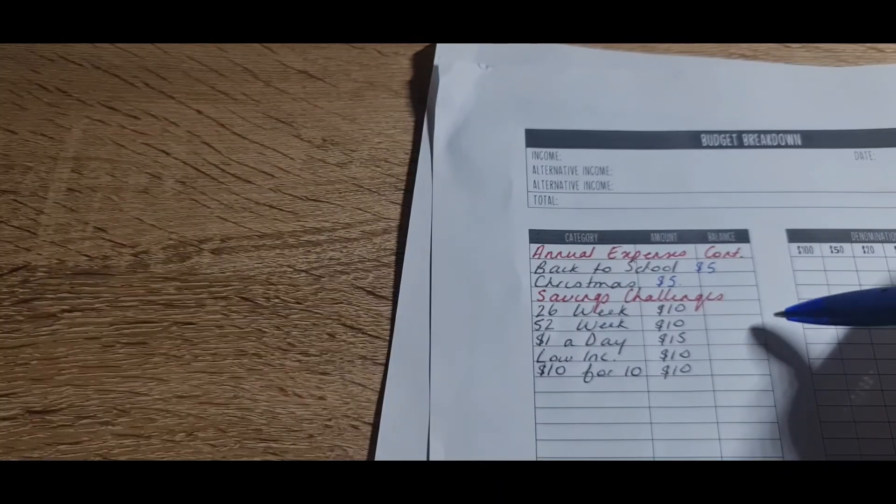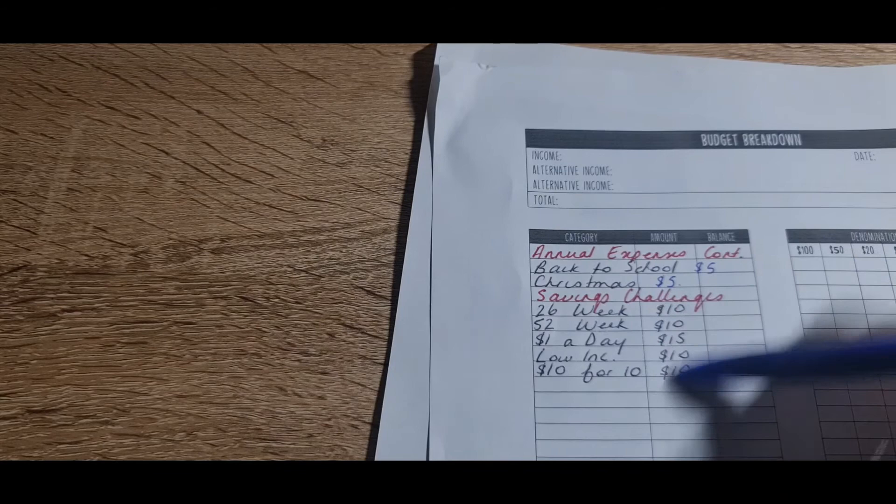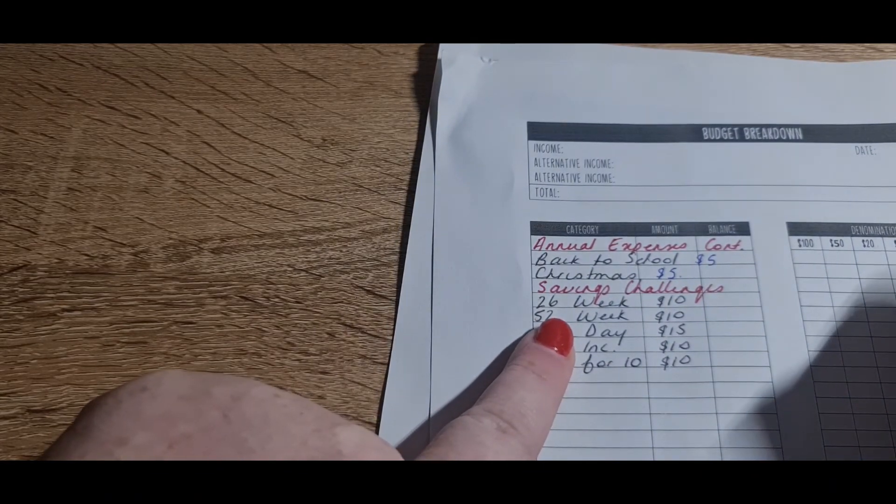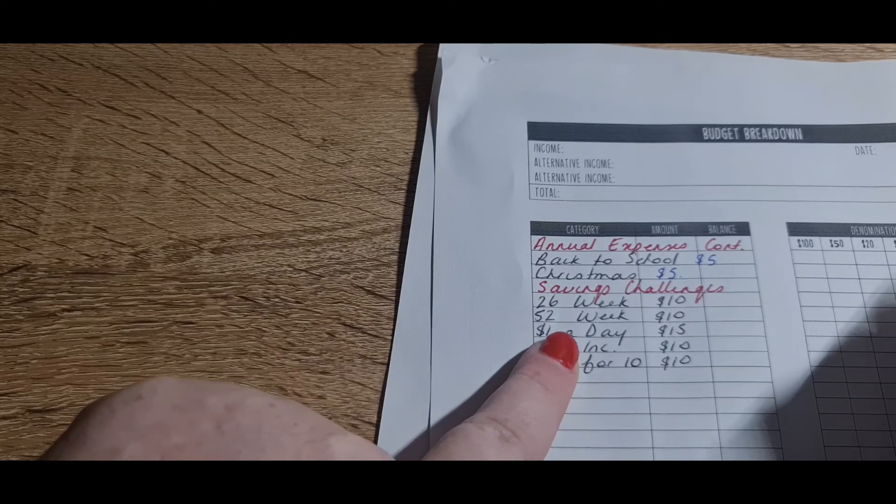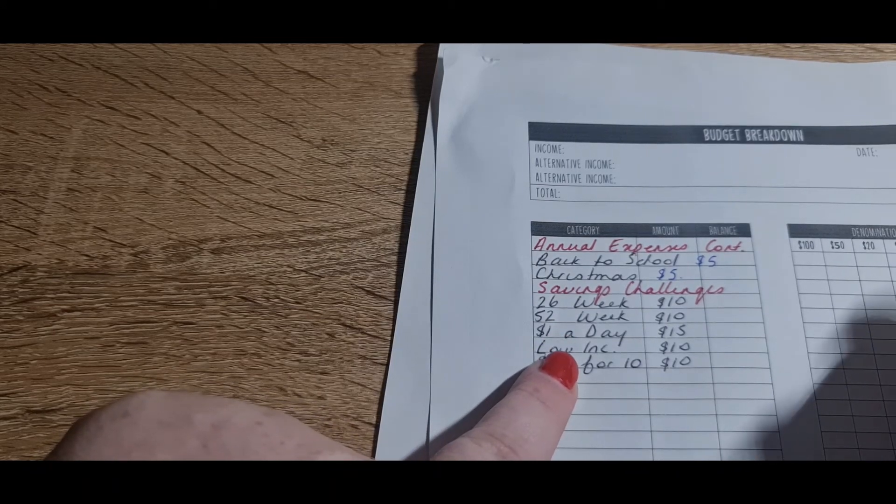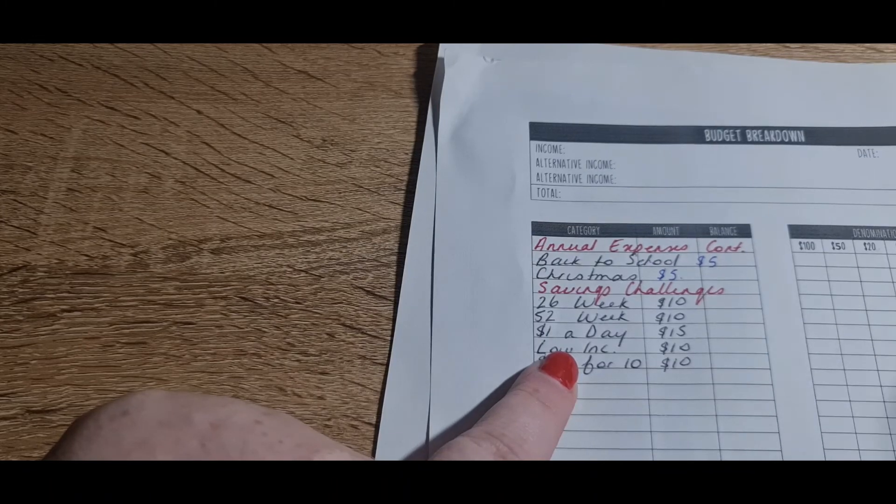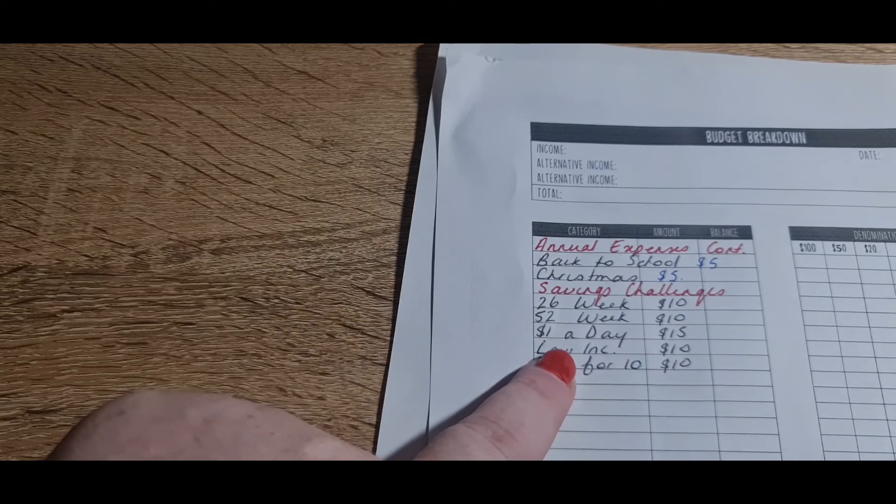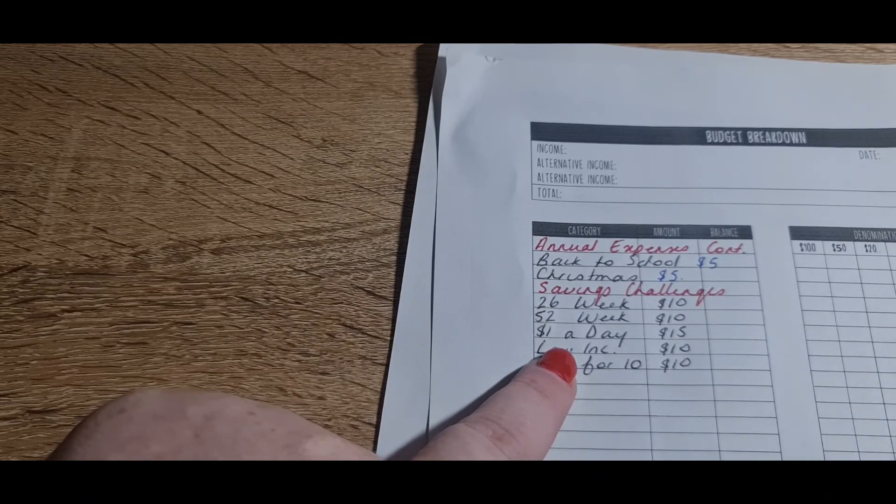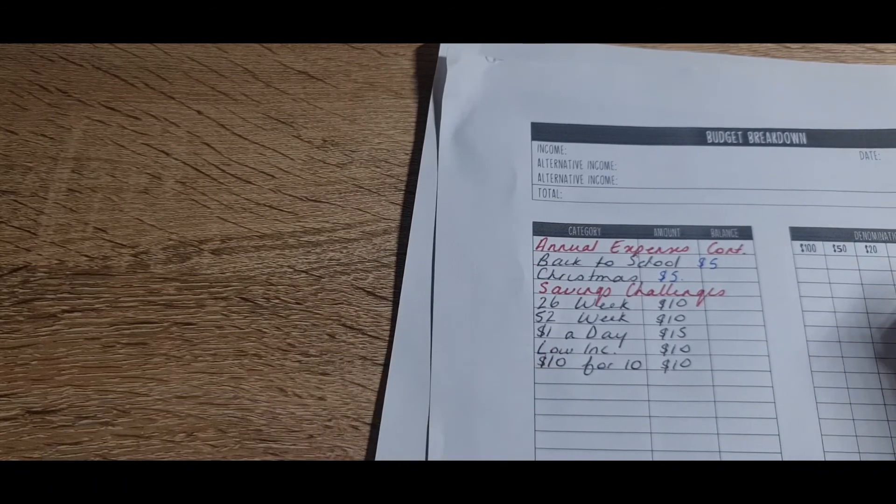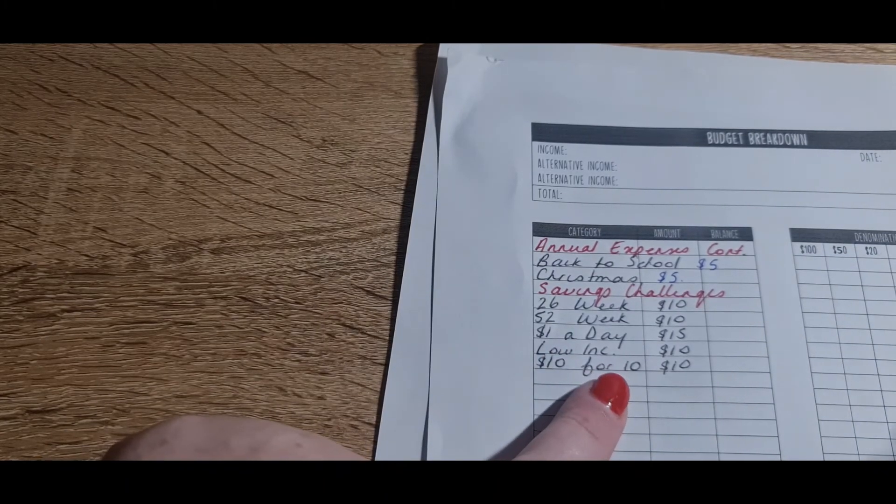And savings challenges, so I've also split this into two. So the 26-week one is getting $10. The 52-week is getting $10. Dollar a day, that is the only one that I will be only stuffing once a fortnight. And that's just because it's easier for me to stuff $15 than it is to do two lots of seven, because our one and two dollars are coins. So I don't want coins in the envelope, so I'm just going to round it up to $15.